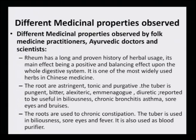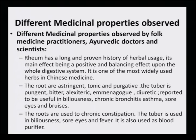Rheum has a long and proven history of herbal usage. Its main effect is a positive and balancing effect upon the whole digestive system. It is one of the most widely used herbs in Chinese medicine. Traditional Chinese medicine (TCM) also uses rheum as one of its main components. The roots are astringent and tonic, and the tuber is pungent, bitter, alexiteric, emmenagogue, diuretic and reported to be useful in biliousness, chronic bronchitis, asthma, sore eyes and bruises. The roots are used for chronic constipation, and the tuber is used in biliousness, sore eyes and fever. It is also used as a blood purifier.